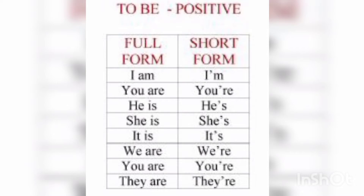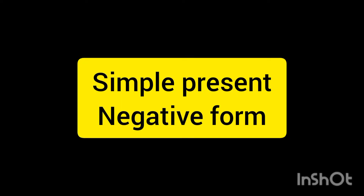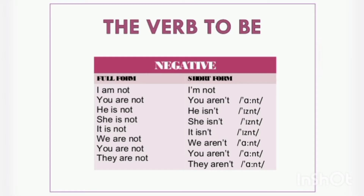Short forms — الصيغة المختصرة كتابةً ونطقاً: I'm, You're, He's, She's, It's, We're, You're, They're. Simple present negative form — صيغة النفي: I am not, You are not, He is not, She is not, It is not, We are not, You are not, They are not.